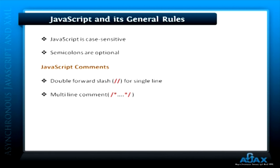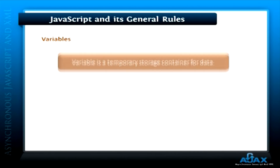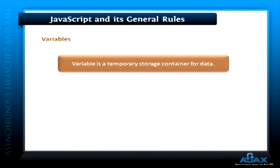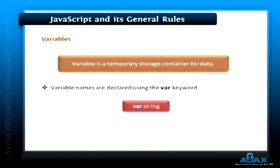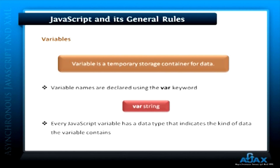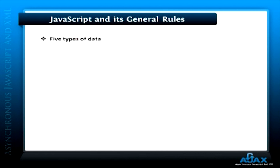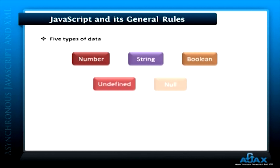Now let's see something about variables. A variable is a temporary storage container for data. In JavaScript, variable names are declared using the var keyword. Every JavaScript variable has a data type that indicates the kind of data the variable contains. There are five types of data types: number, string, boolean, undefined, and null. These data types store data directly in a variable.